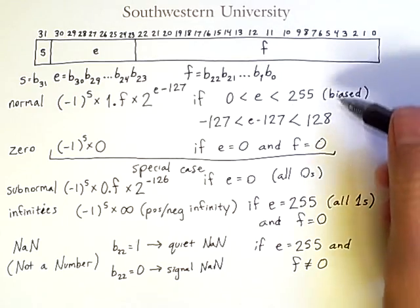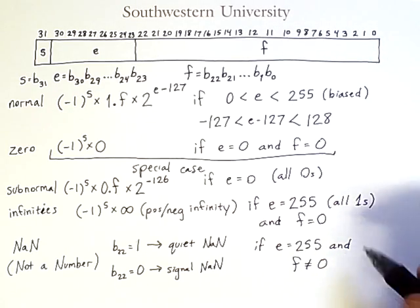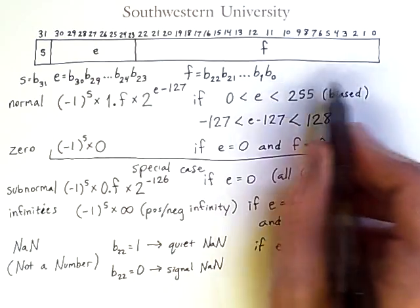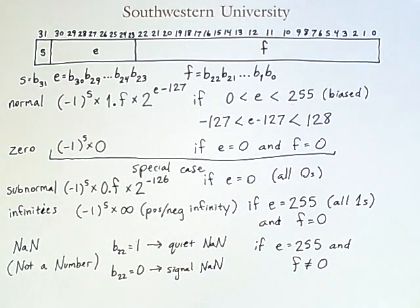So all of these possibilities explain how to interpret the very complicated 32-bit floating-point number format.